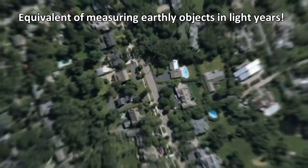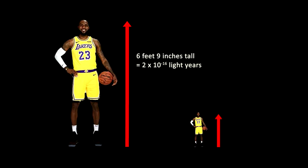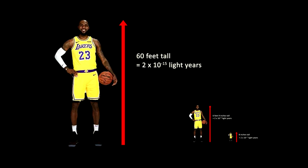It's like saying that LeBron James is 2 times 10 to the negative 16 light years in height. And if he was just 2 times 10 to the negative 15, or 2 times 10 to the negative 17 light years in height, he wouldn't have been able to play basketball. Well, this is true because it would mean that instead of being six foot nine inches like he is, he would be either a 60 foot tall lumbering giant, or less than eight inches tall.